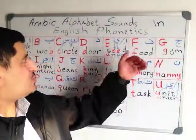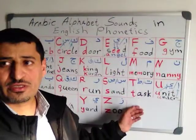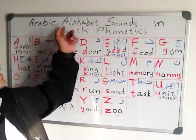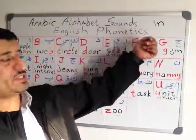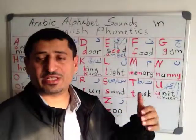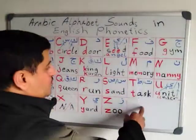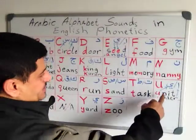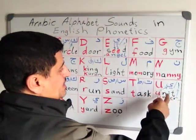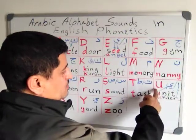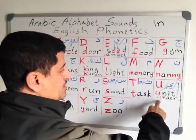Assalamu alaikum. I will continue to explain and teach you the Arabic alphabet sounds in English phonetics, as a comparison in English. Last time we stopped at the 'ya' sound — we say alef and ya. Alef and ya sounds like the 'you' sound in English, and I gave you examples like 'unit' or 'under' in English.